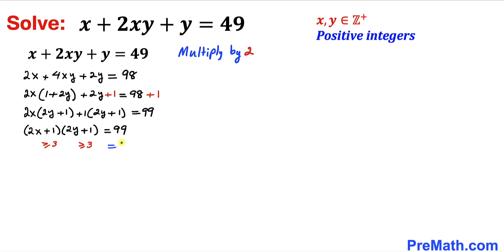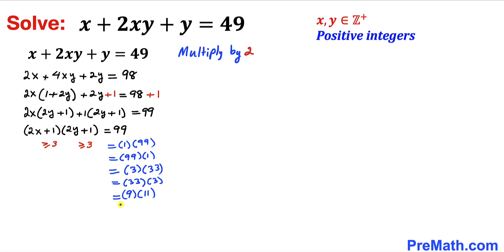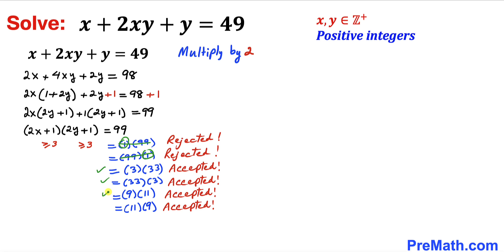The factor pairs of 99 are: 1 times 99, 99 times 1, 3 times 33, 33 times 3, 9 times 11, and 11 times 9. Since both factors must be greater than or equal to 3, the pair 1 times 99 and 99 times 1 are not possible, so we reject those two scenarios and accept the remaining four.